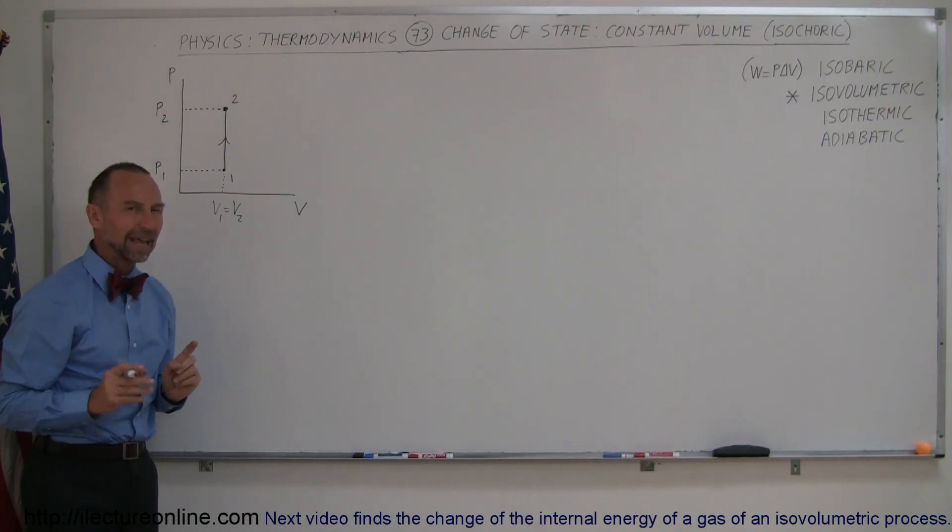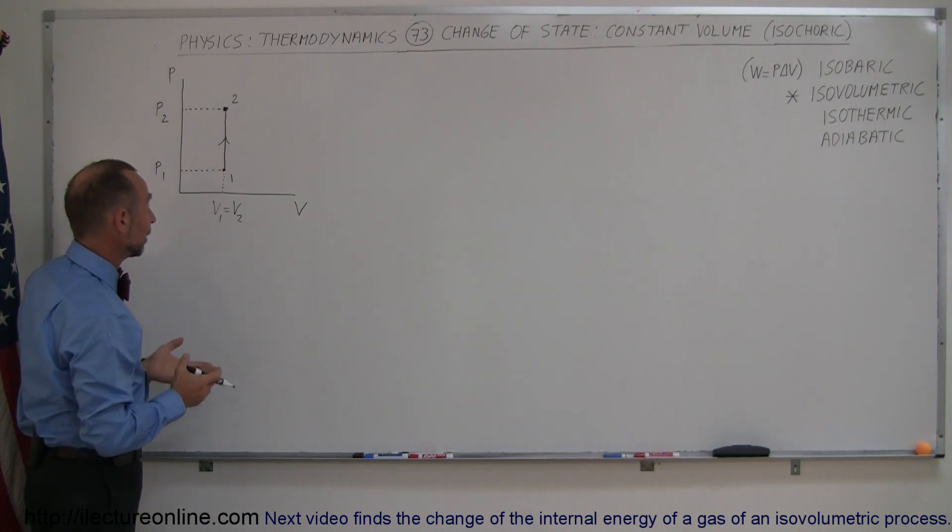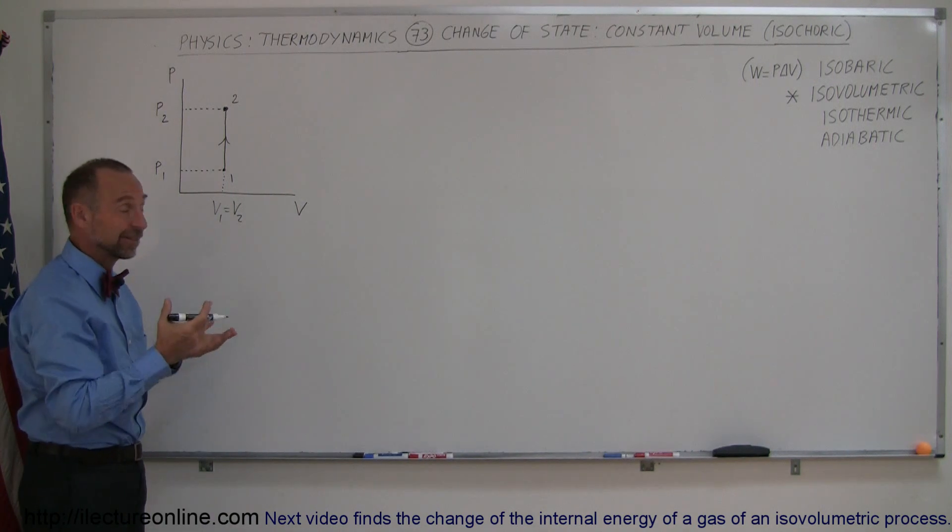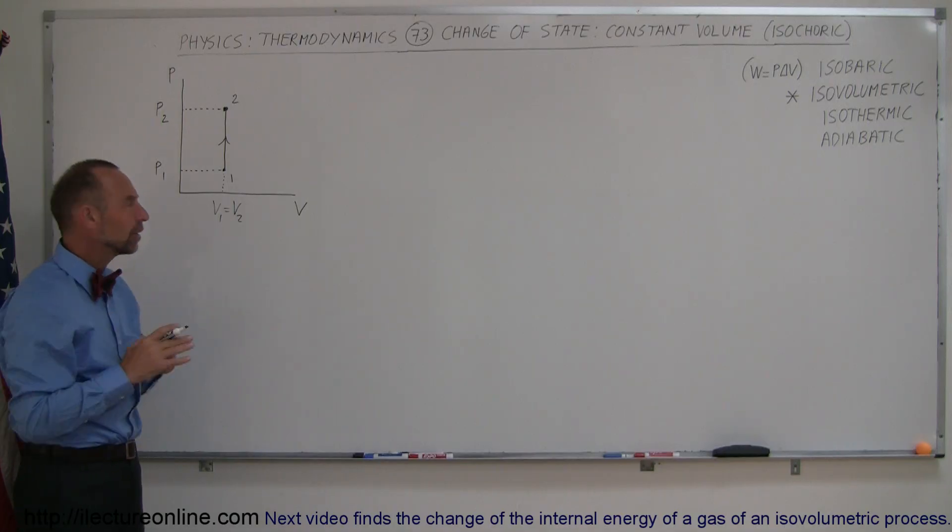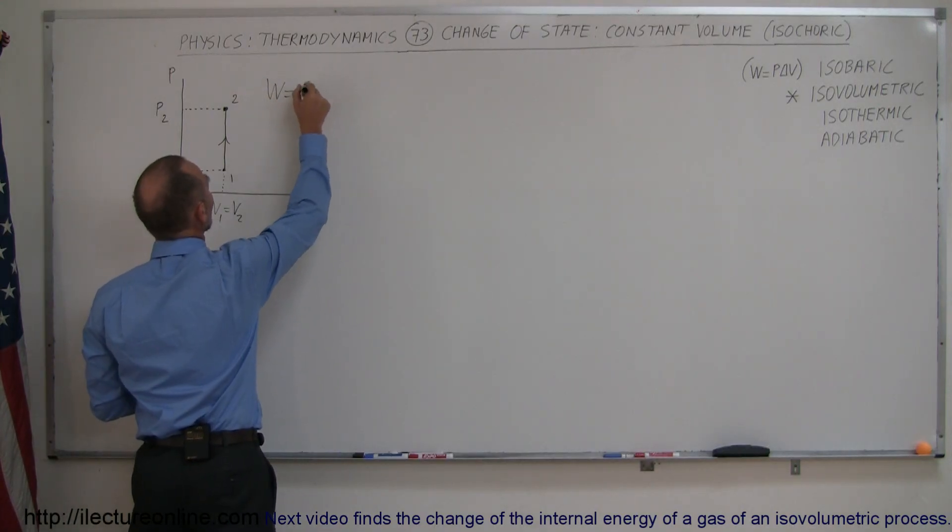But notice here, if I asked you to find the area underneath that curve, what would you say it is? The area underneath a vertical line is simply 0. And since the work done is equal to the area underneath a curve, and since there's no area underneath that curve, work done equals 0.